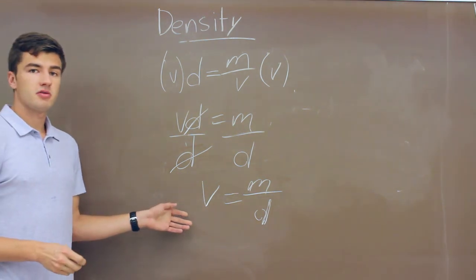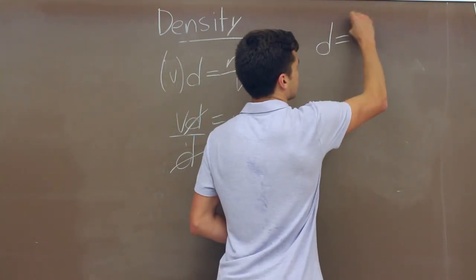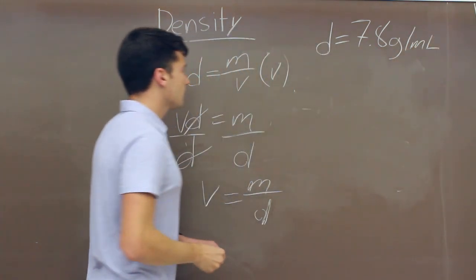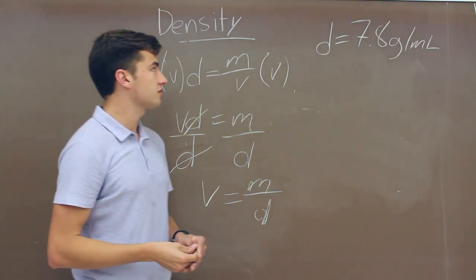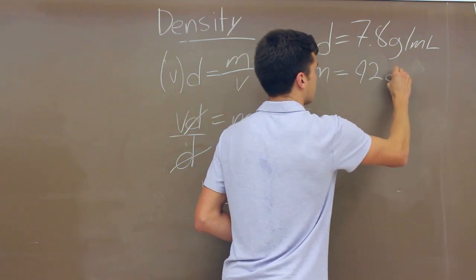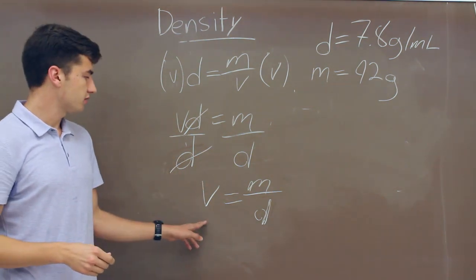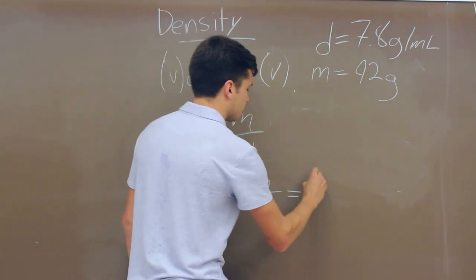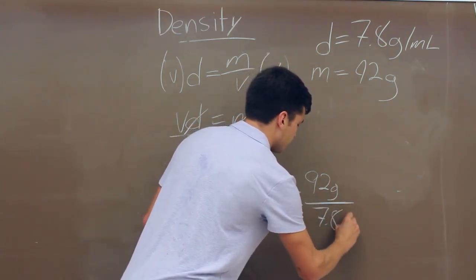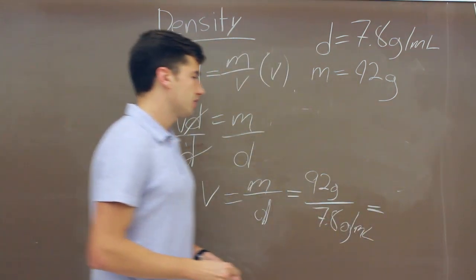So now we're going to determine the volume. Our object is iron, and the density of iron is 7.8 grams per milliliter. We put this iron object onto a scale and determine that the mass is equal to 92 grams. Plugging these into our equation — 92 grams divided by 7.8 grams per milliliter — tells us that the volume is 12 milliliters.